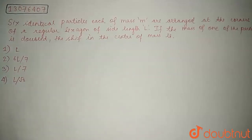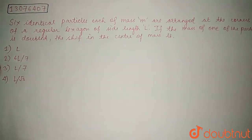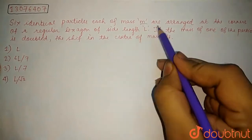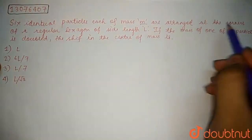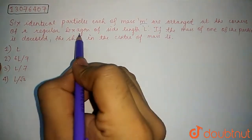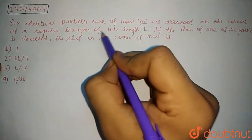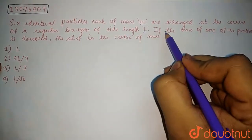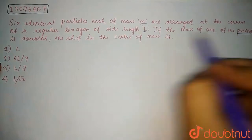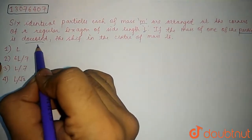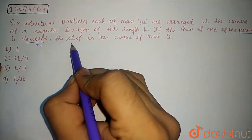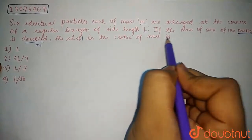Hello students. The question here is, six identical particles, each of mass M, are arranged at the corners of a regular hexagon. Regular hexagon means the side length is equal to L. If the mass of one of the particles is doubled, the shift in the center of mass is,